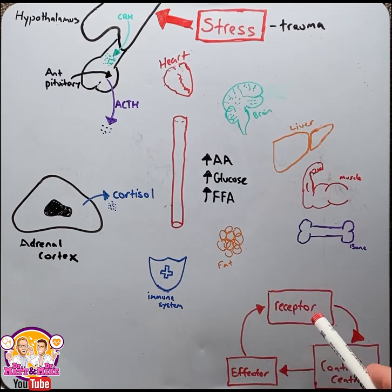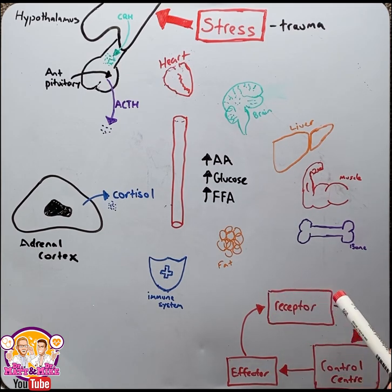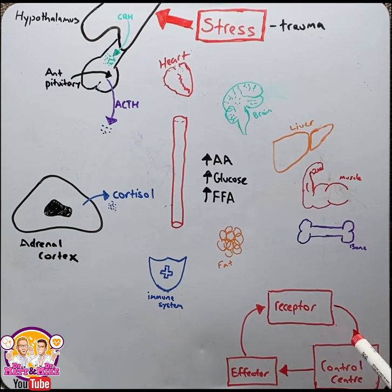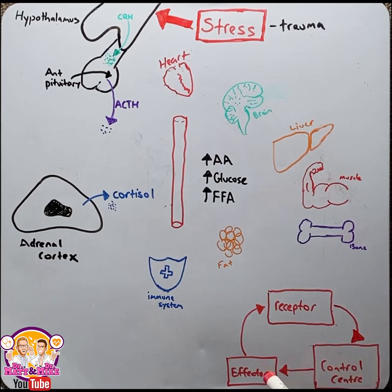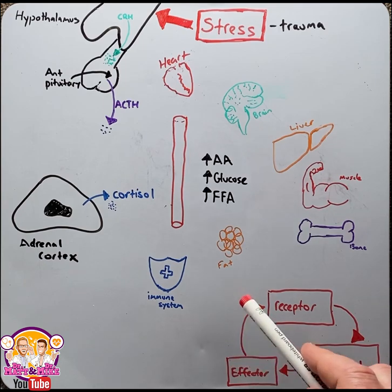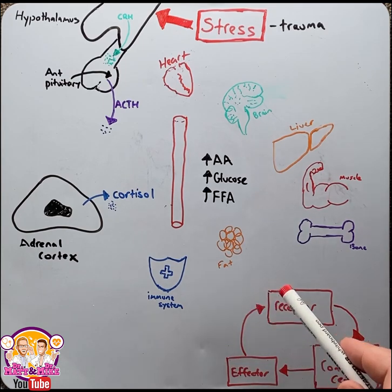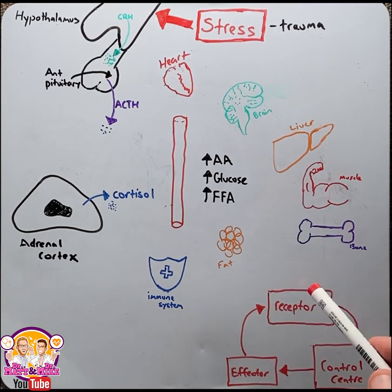The receptor receives a stimulus, which then relays this information onto the control center to make sense of it. The control center will then send a signal to the effector to produce a response, which usually opposes the original stimulus.